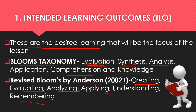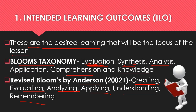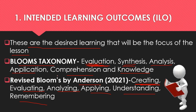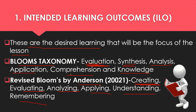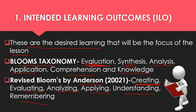Take note that the original version states the categories as nouns — such as evaluation and synthesis — while in the new version by Anderson they are stated as verbs, implying a more active form of thinking. There are three major changes in the revised taxonomy: changing category names from nouns to verbs, rearranging the categories, and establishing levels of knowledge. In the new version, the highest value is creating.